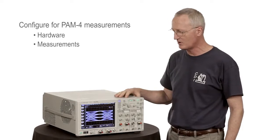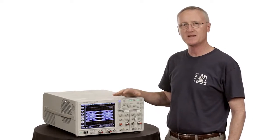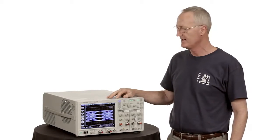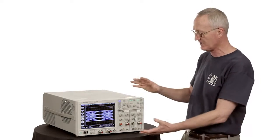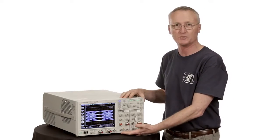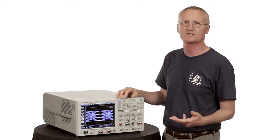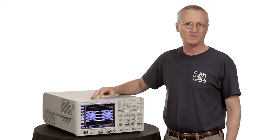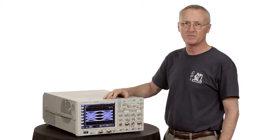So first let's talk about hardware. When configuring a scope to make a measurement, we often ask what bandwidth do you need? The DCA is capable of several different bandwidths depending on the plug-in module you put into the mainframe. We've got plug-ins that do 20 gigahertz, 30 gigahertz, 50 gigahertz, even up to 80 gigahertz bandwidths. What is going to be appropriate for your PAM-4 measurement?